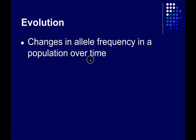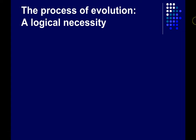The bigger question is how. The primary mechanism driving evolution is called natural selection. Natural selection is the idea that Charles Darwin gave us in his pioneering book, The Origin of Species. I'm going to lay out the basic premises here, and you'll see that it sort of has to happen in this way.